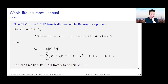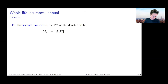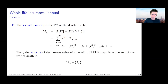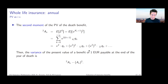We can also compute the second moment using the same reasoning: take the expected value of Z squared, replace Z with the expression we have, and notice it is the same kind of expression but using v squared instead of v. The actuarial notation for this is a superscript 2 on the left-hand side of the symbol: 2-A_x. Having the second moment and the first moment, the variance of the random variable representing the present value of the whole life insurance policy — with death benefit one euro payable at the end of the year of death — is the second moment minus the square of the first moment.